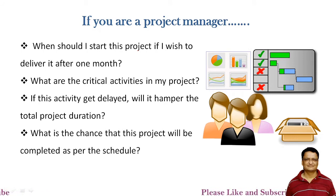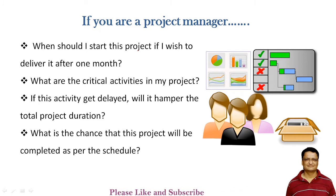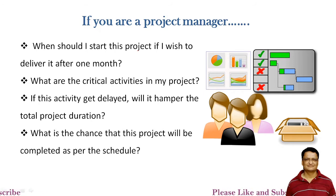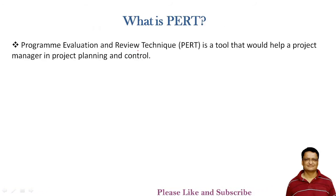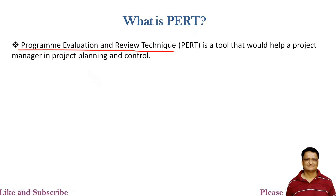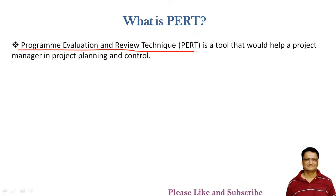To such and many questions, you need certain answers, and these answers can be found with the help of techniques of project management. The two techniques are Critical Path Method (CPM) and PERT, that is Program Evaluation and Review Technique. PERT is a tool which helps the project manager for project planning and control.